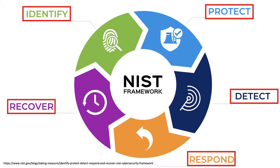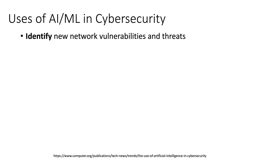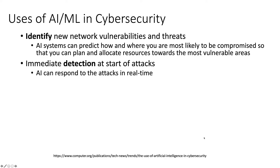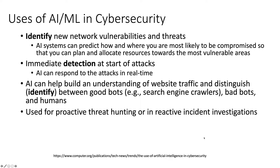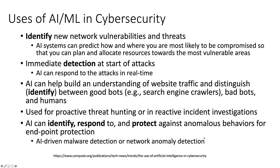Let's see how AI applies to the NIST framework. Machine learning can help identify new network vulnerabilities and threats. AI systems can predict how and where you're most likely to be compromised so you can allocate resources toward the most vulnerable areas. It can help with immediate detection at the start of attacks, and AI can respond in real time because these methods are automated — a machine and algorithm making decisions. AI can also distinguish between good bots such as search engine crawlers, bad bots, and humans, and it can be used for proactive threat hunting or reactive incident investigation. Finally, AI can identify, respond to, and protect against anomalous behaviors for endpoint protection, such as AI-driven malware detection or network anomaly detection.